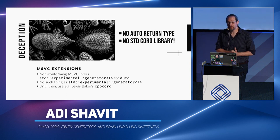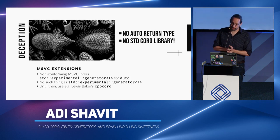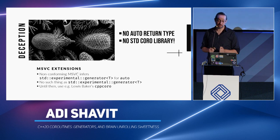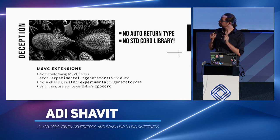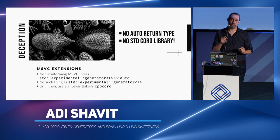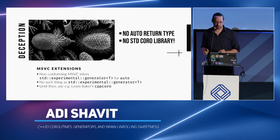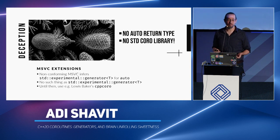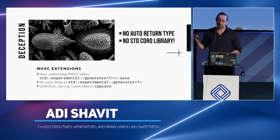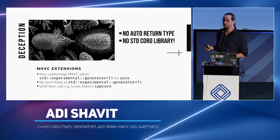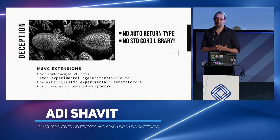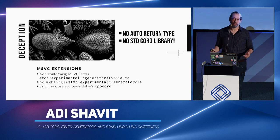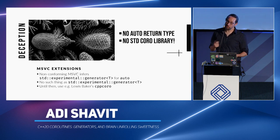I should clarify: while all that code compiles and works, it relies on a Microsoft Visual Studio feature that infers the auto return type as std::generator<T>. However, there is no such class as std::generator in the C++20 standard. The C++ standard ships only with a specification of the low-level machinery that allows the compiler to generate coroutine support objects — no standard coroutine support library. We either have to write our own, or use libraries like CppCoro from Lewis Baker, which implements many different coroutine support types.